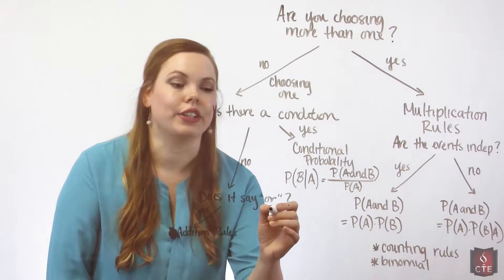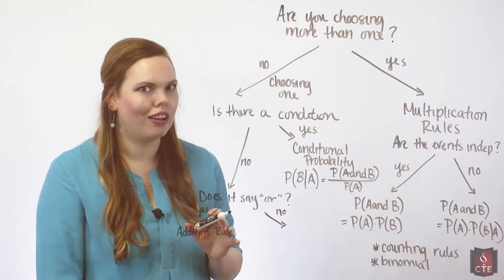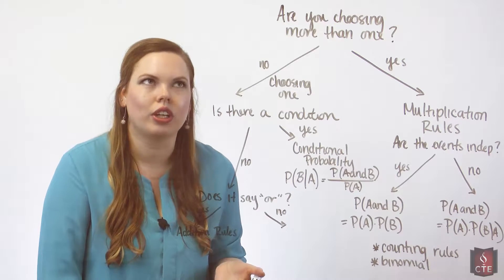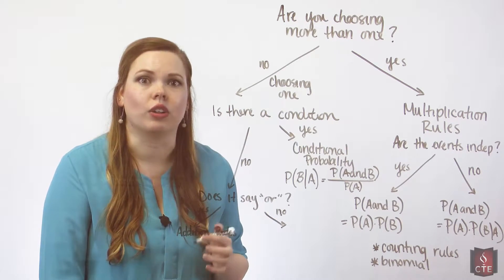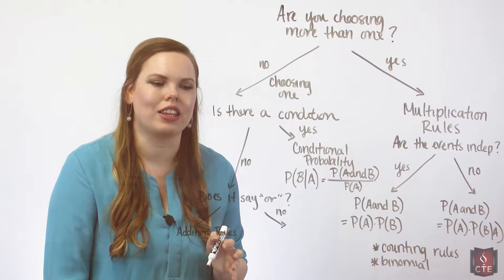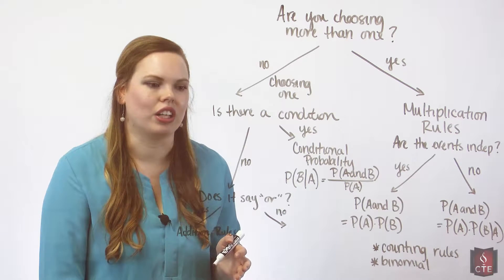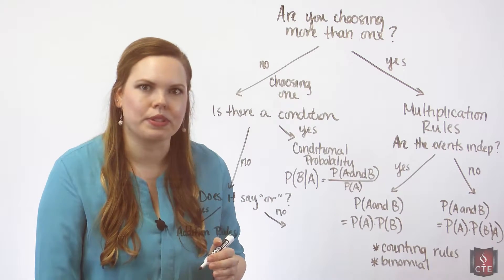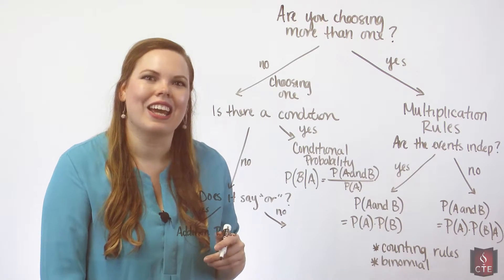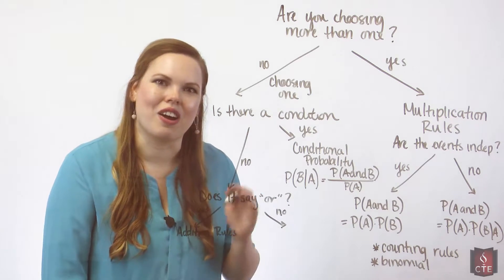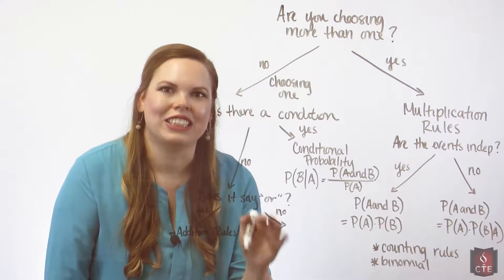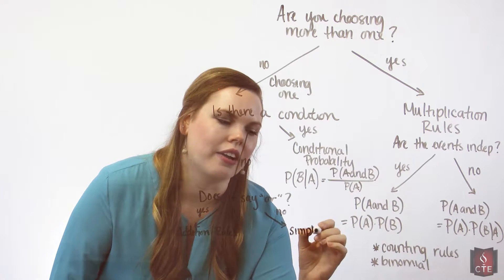If the answer is no — it does not say 'or' — then you're probably dealing with a simple probability problem: equally likely events, relative frequency, or subjective probability. Just take the number of outcomes in the event over the total number of possible outcomes. This is a very simple probability you can solve without any special rules.